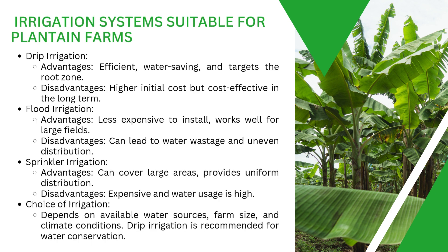You also want to build an irrigation system. An irrigation system is simply a system that allows for water accessibility on the farm. There are three choices: drip irrigation, flood irrigation, and sprinkler irrigation.